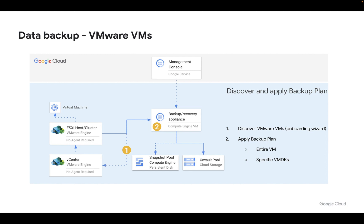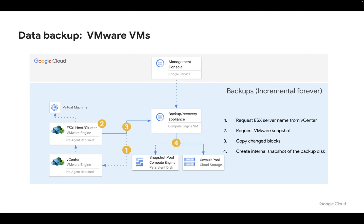We apply backup plans to the VMs and then begin the process of backing those VMs up, either the entire VM or specific VM disks in each VM. The backups themselves are always done in a four-step format. We request the ESXi server name from the vCenter to learn where the VM is running today.